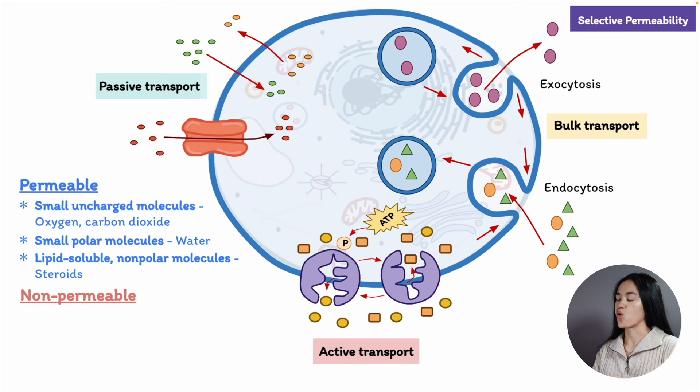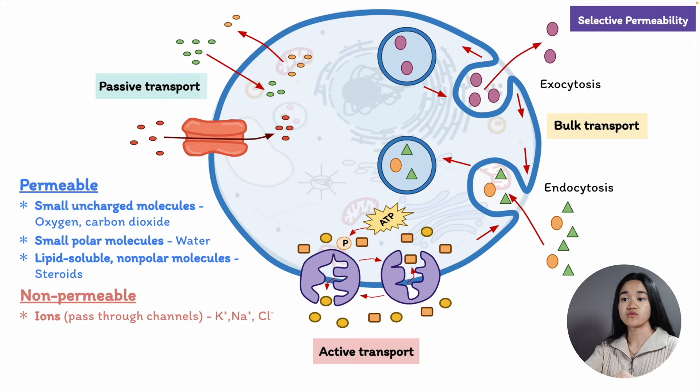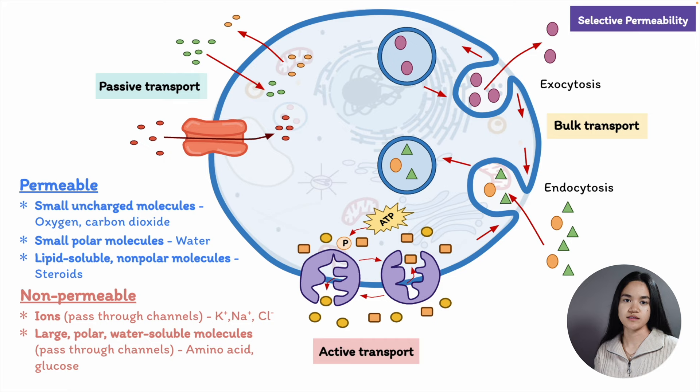When it comes to highly impermeable substances, these include all charged substances including all inorganic ions — think potassium, sodium, chloride, and calcium. Ions pass through protein channels no matter if they are small. For larger polar and water-soluble molecules such as amino acids and glucose, these molecules also pass through protein channels.